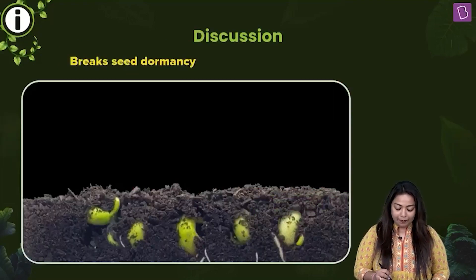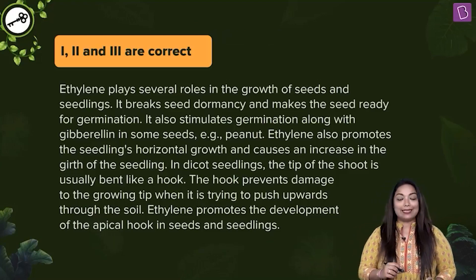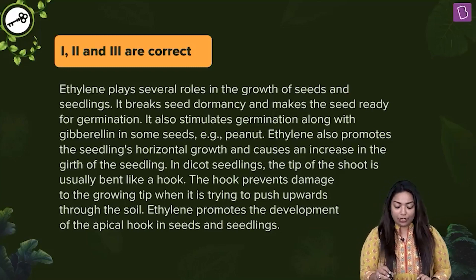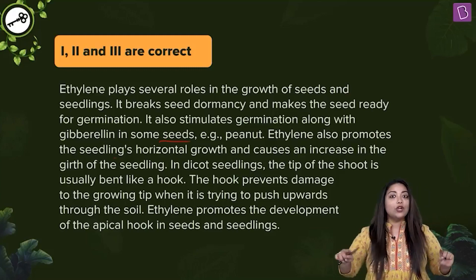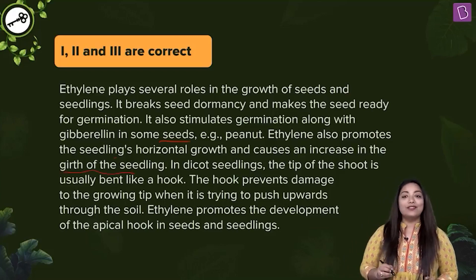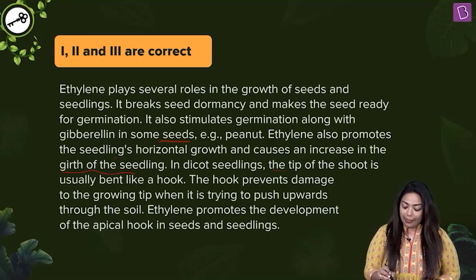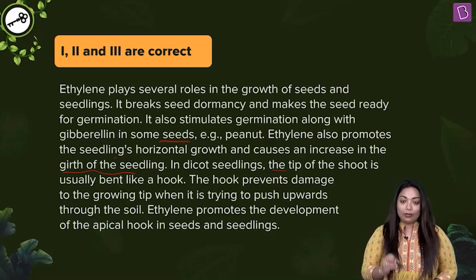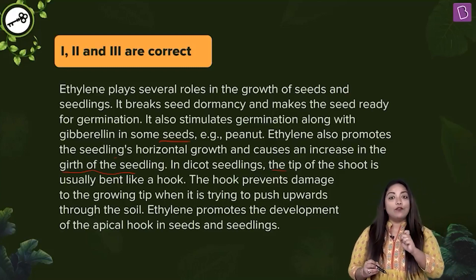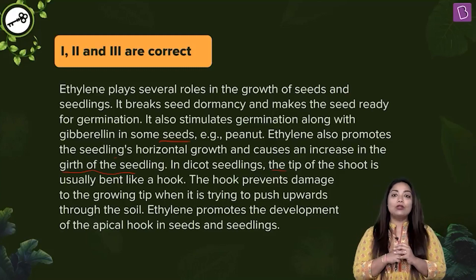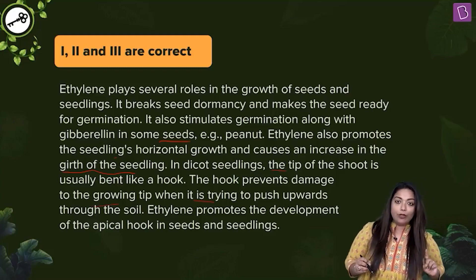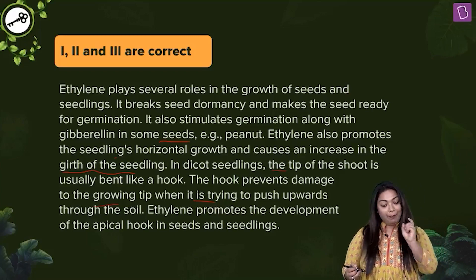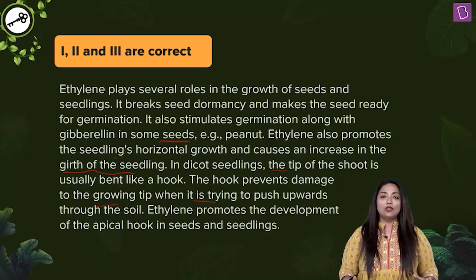Ethylene plays several roles in the growth of seeds and seedlings. It breaks seed dormancy and makes the seed ready for germination. It also stimulates germination along with gibberellin in some seeds, like peanut. Ethylene also promotes horizontal growth of seedlings and causes an increase in girth. In dicot seedlings, the tip of the shoot is bent like a hook — called the apical hook — which prevents damage to the growing tip when pushing up through the soil. Ethylene promotes the development of this apical hook.